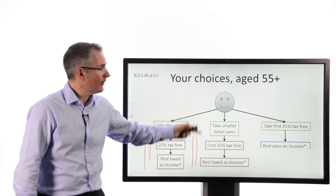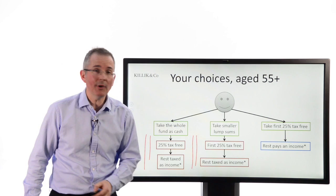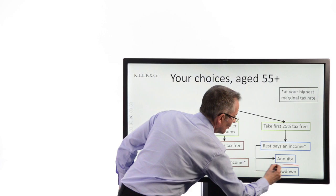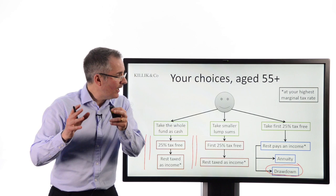Or take the first 25% tax-free. This is a kind of summary of your choices. The rest buys you an income. And that can be in the form of an annuity or income drawdown. And again, be careful. Because a lot of the less scrupulous advisors out there might say, you know, this is much more flexible now. That's the one you want. Draw it off when you like, how much you like.